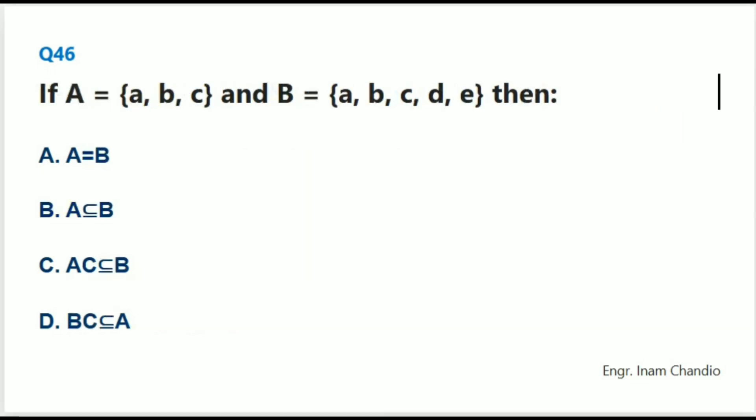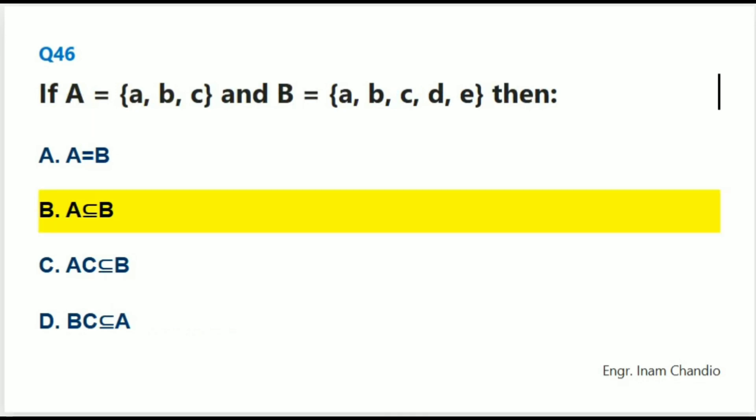If A = {A, B, C} and B = {A, B, C, D, E}, then: The correct answer is B. A ⊂ B (A is a subset of B).